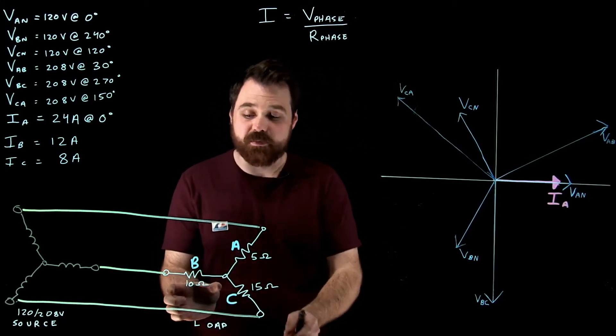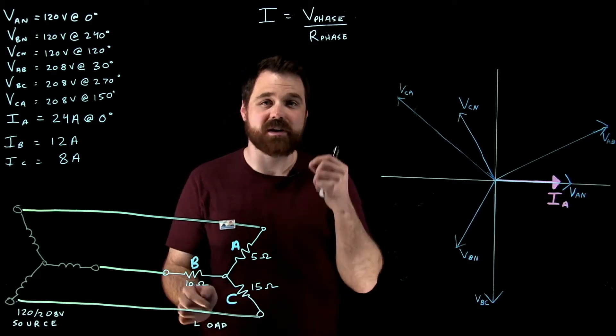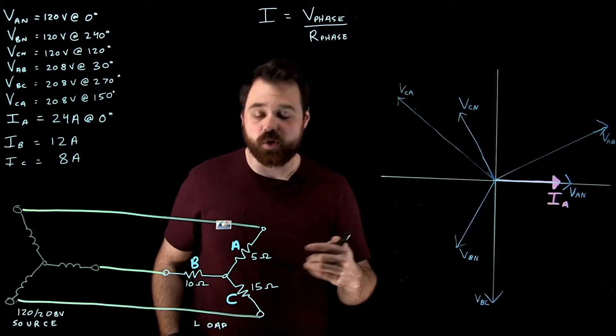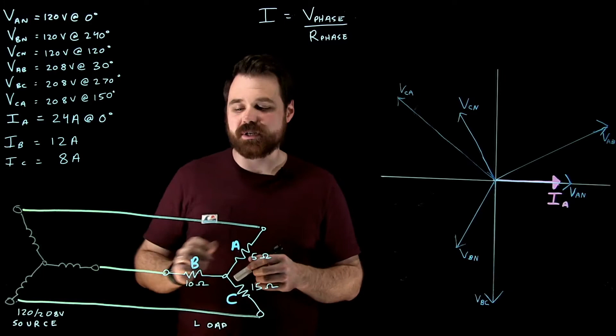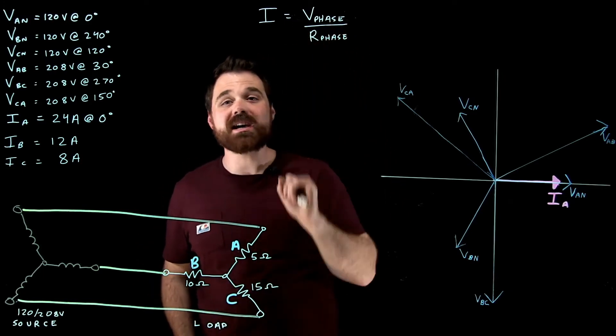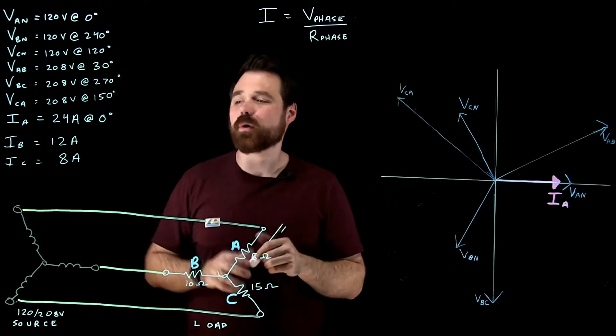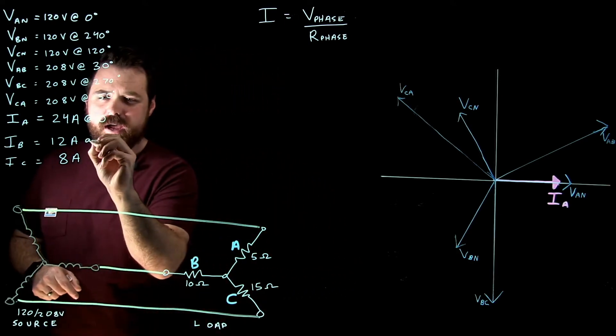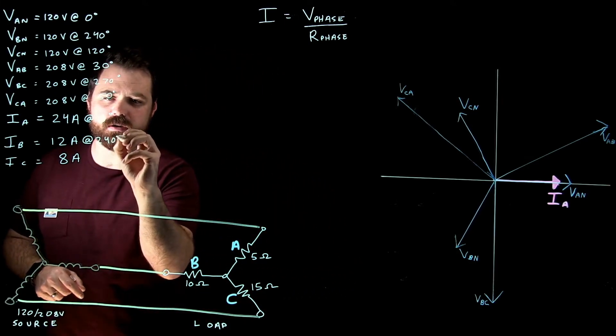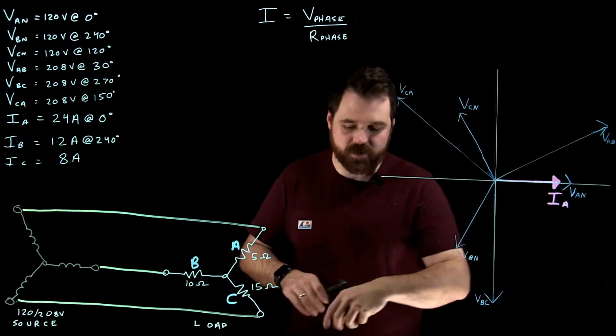Now phase B, same thing, we have a resistor, which means my current is in phase with my voltage. So I had 12 amps, and it's going to be in phase with the voltage. Well, the B phase voltage is at 240, which means that this is also going to be at 240 degrees. So I come over here and I plot that.